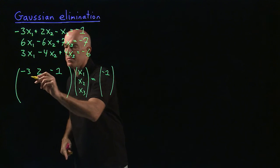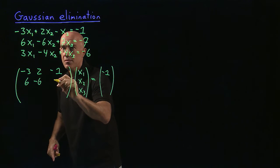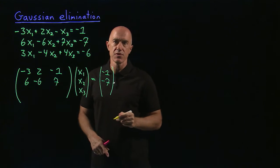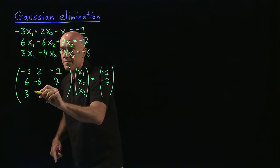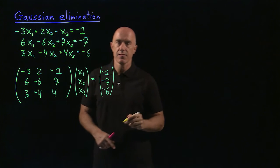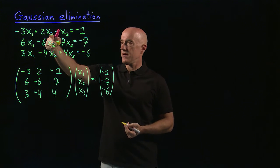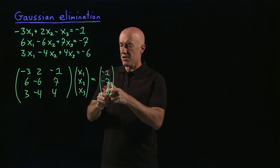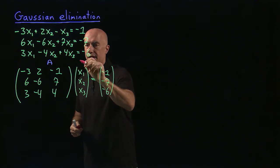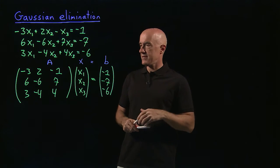The second equation becomes the second row: six times x1 minus six times x2 plus seven times x3 equals minus seven. And the last equation becomes the third row: three x1 minus four x2 plus four x3 equals minus six. That's the usefulness of matrices — we can represent this system by a matrix equation, written simply as A times the vector x equals the right-hand side B. That's our equation: Ax equals B.